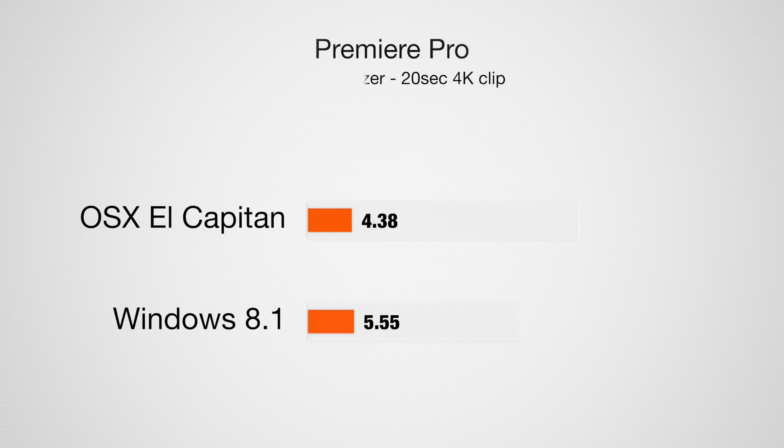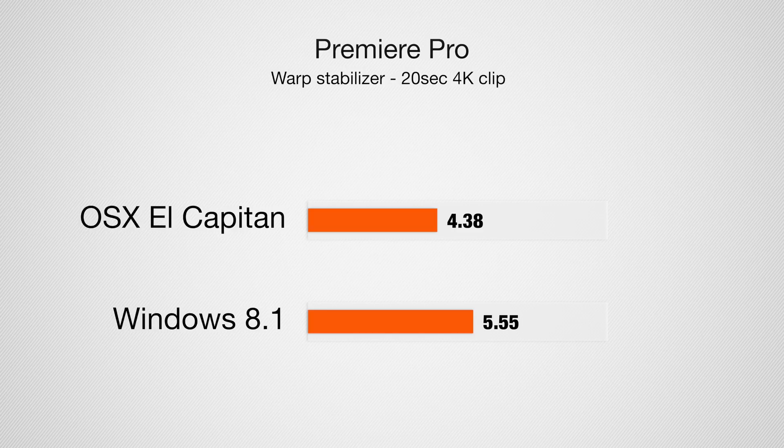So let's see if it's actually true that OSX runs Premiere Pro better than Windows. The first test: we're going to take a 20-second 4K clip, run the Warp Stabilizer filter on it, and see how long that render takes. On OSX we get 4 minutes and 38 seconds. Running Premiere Pro on Windows, we get 5 minutes and 55 seconds.